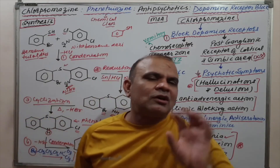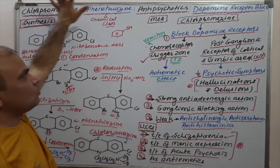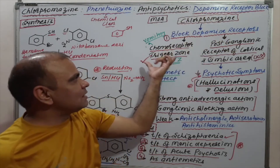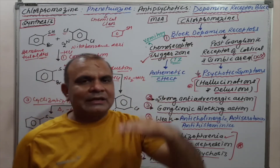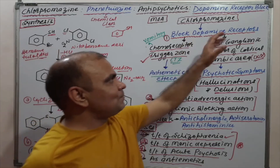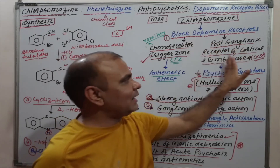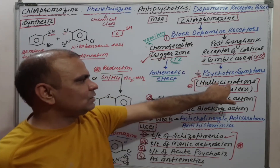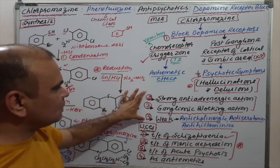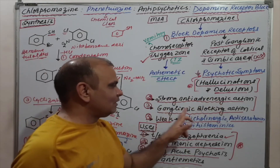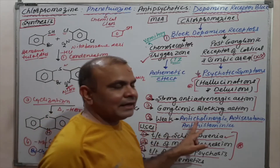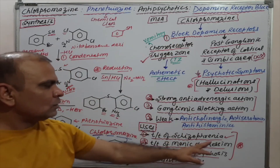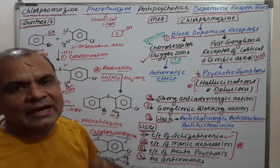A quick review: Chlorpromazine belongs to phenothiazine and to the antipsychotic class with dopamine receptor blocking action. Blockage at the chemoreceptor trigger zone results in antiemetic effect. Blockage of dopamine receptors in the cortical and limbic area results in antipsychotic effects — depression of hallucinations and delusions. Additional mechanisms are strong anti-adrenergic and ganglionic blocking action, and weak anticholinergic, antiserotonin, and antihistaminic actions. Uses include schizophrenia, manic depression, acute psychosis, and as an antiemetic.